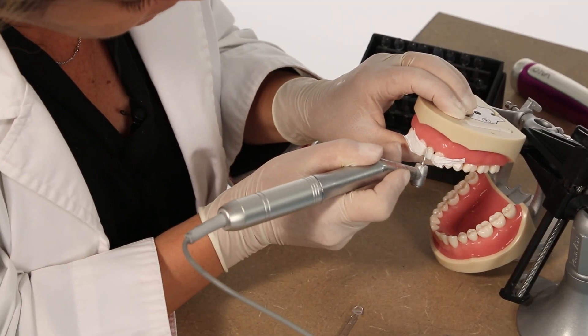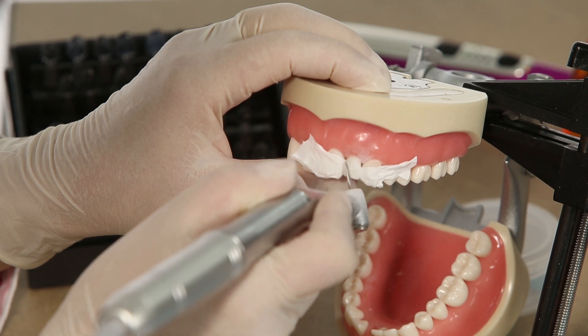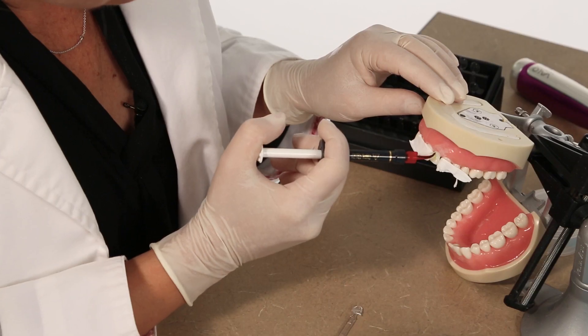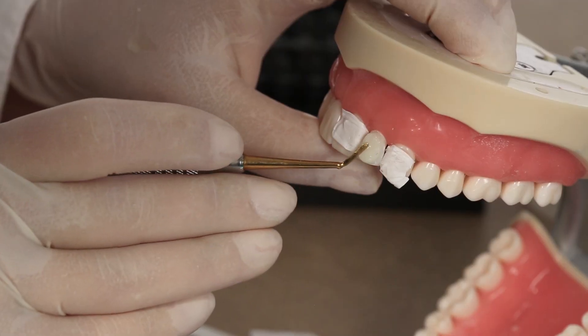Some restorations may require an additional layer of composite. In this case, roughen the cured composite with a diamond burr. Bond, cure, and repeat the process.